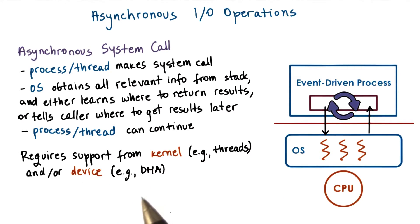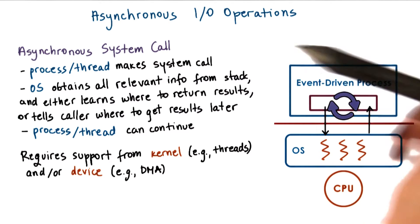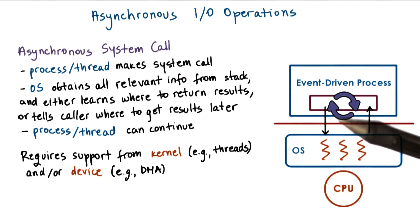We will return to asynchronous IO operations in a later lecture. What you need to know for now is that when we're using asynchronous IO operations, our process will not be blocked in the kernel when performing IO.